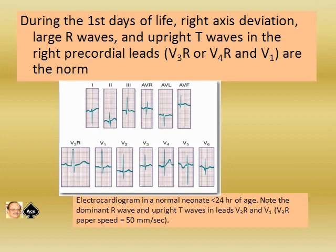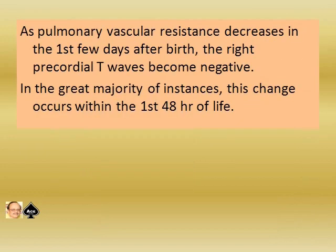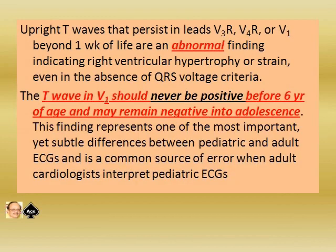Be familiar with normal ECGs in children, because if you are not aware of these normal ECGs you may wrongly interpret them when comparing with adult ECGs. As pulmonary vascular resistance decreases in the first few days after birth, the right precordial T-waves become negative. In the great majority of instances, this change occurs within the first 48 hours of life. Upright T-waves that persist in lead V3R, V4R, and V1 beyond one week of life are an abnormal finding.